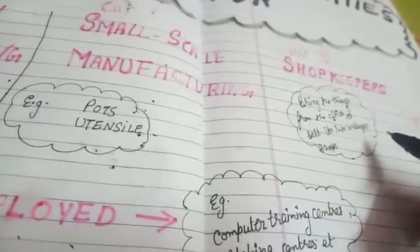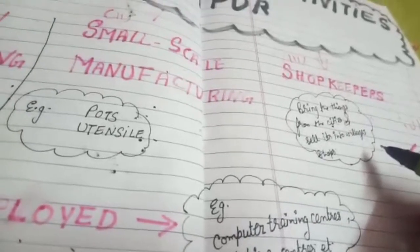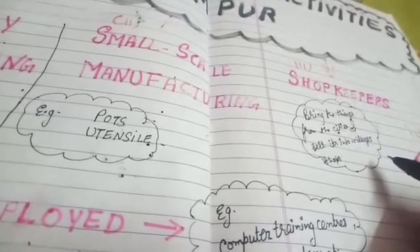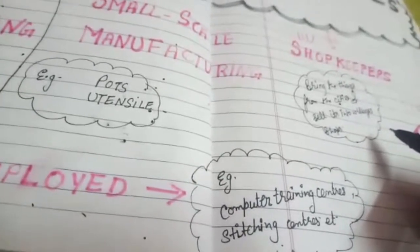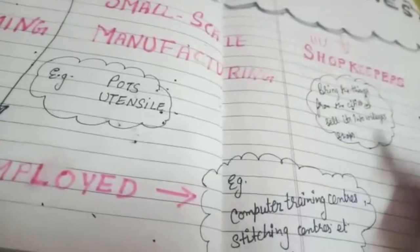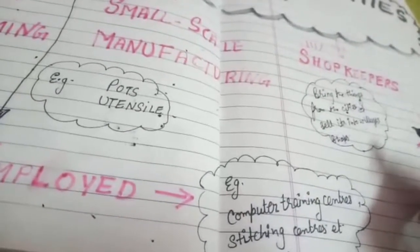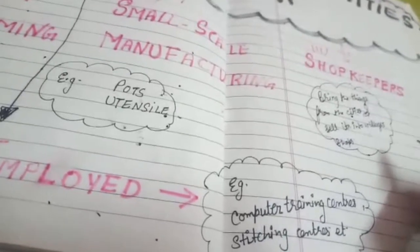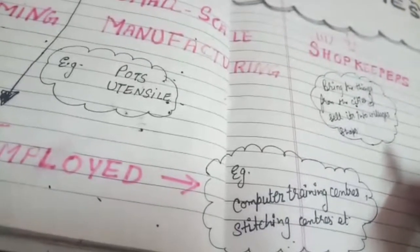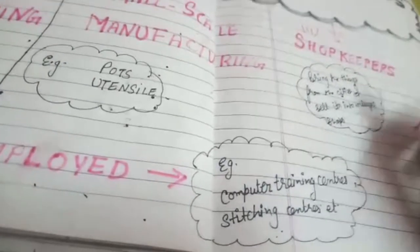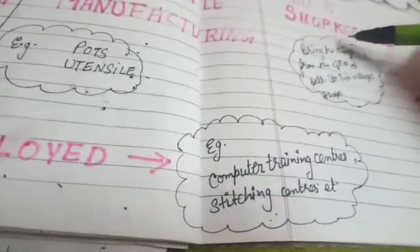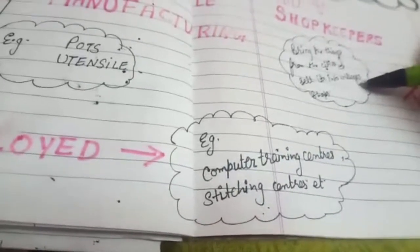In shopkeeping, shopkeepers in Palampur buy goods from the wholesale market in cities and sell them in village small stores. These stores sell a wide range of products like wheat, rice, oil, and cloth. Some people who have shops near the bus stop also sell eatables. Shopkeeping essentially means bringing things from the city and selling them in the local market.